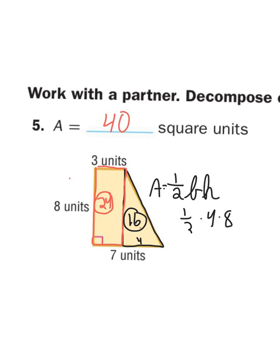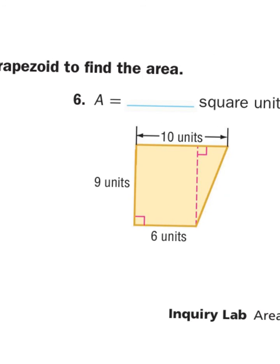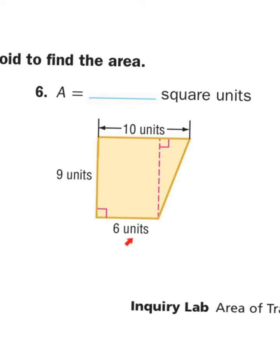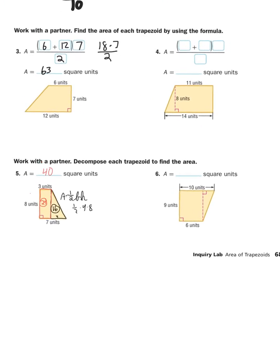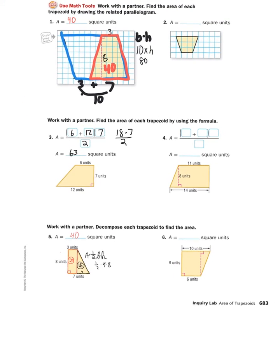For problem six, you'll need to find the area of the rectangle and the area of the triangle and add them together. Be careful with the triangle because the base is on top, and the whole bottom is 10, so you'll need to figure out the triangle's base from that. Don't forget to add the two areas together when you're done. After you finish problems one through six you should be done with the inquiry lab. Make sure you ask me any questions when you hand this in.